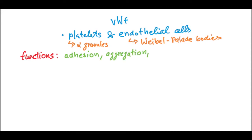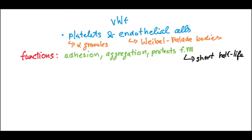Von Willebrand's factor has many functions — it's very important for platelet adhesion and platelet aggregation. It also works as a protector of factor eight in the blood, because normally factor eight from the coagulation cascade has a very short half-life and is very easily degraded by enzymes in the blood. But if it binds to von Willebrand's factor, the half-life of factor eight significantly increases.